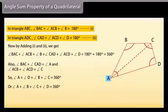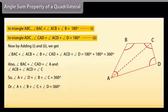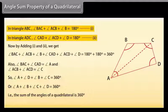So angle A + angle B + angle C + angle D = 360 degrees. That is, the sum of the angles of a quadrilateral is 360 degrees.